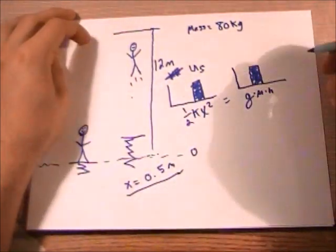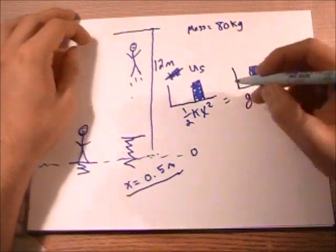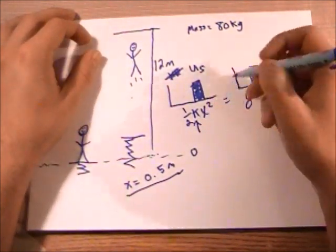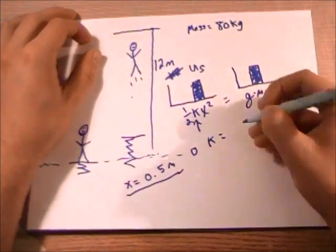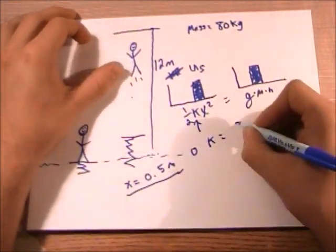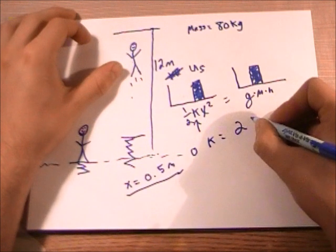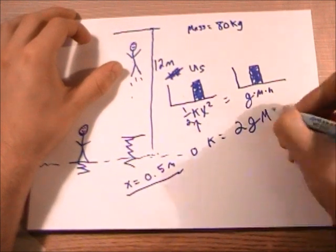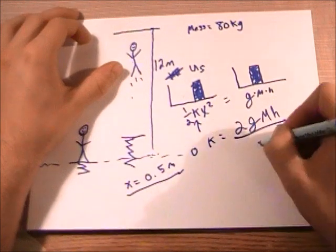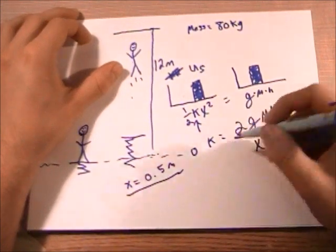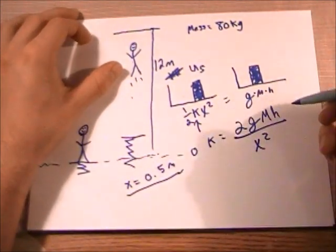So basically it's a pretty simple problem, you're just isolating k now and solving for k. So we're going to have k is equal to 2 times your gravitational constant times your mass times your height and all of that divided by x squared, where again x is how far your spring is being compressed.